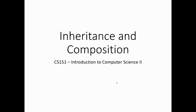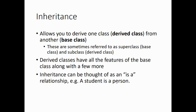Today we're going to talk about inheritance and composition, and this is the first new material for CS151. Inheritance is a process that allows you to derive one class — called the derived class — from another, which is the base class. They're sometimes referred to as the super class and the sub class. Derived classes have all the features of the base class, along with a few more.